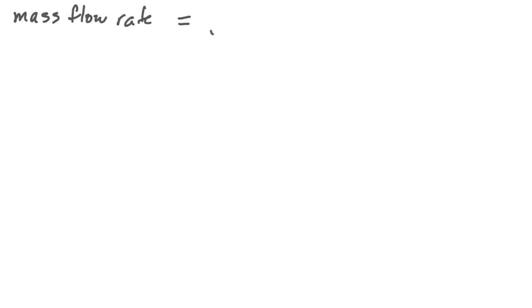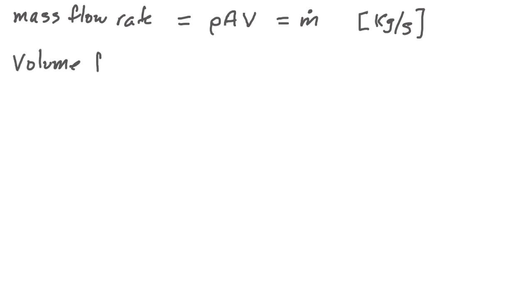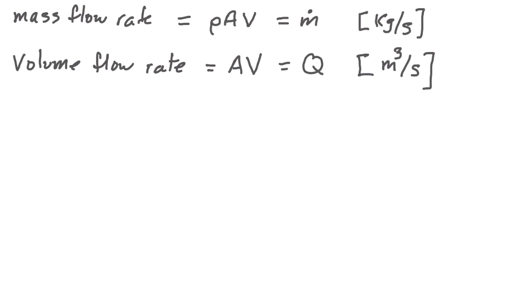The mass flow rate is equal to the density times the cross-sectional area through which a fluid is flowing, times the velocity with which that fluid is flowing. We give that the symbol m-dot, and in the SI system it's expressed in units of kilograms per second. Very often we're interested in the volume flow rate, which is simply the cross-sectional area times its velocity, given the symbol q, expressed in units of meters cubed per second.